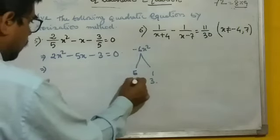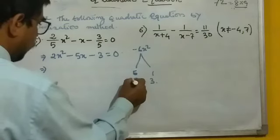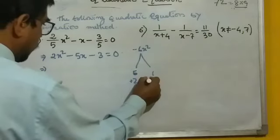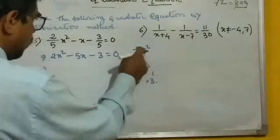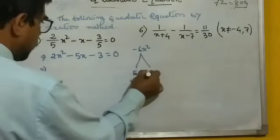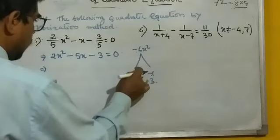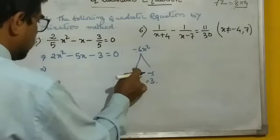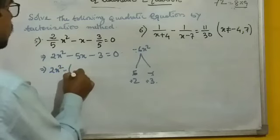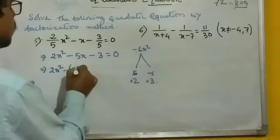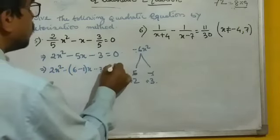But if we take 2 and 3, 2 into 3 is 6, and we will not get minus 6. But with 6 and 1, 6 into minus 1 is minus 6. So we take 6 and 1. Therefore: 2x squared minus 6 minus 1 times x minus 3 equal to 0.